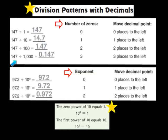In the next problem, we see 147 being divided by 1,000. In the number 1,000, I know that there are three zeros. So what that means is I'm going to move the decimal three places to the left — 1, 2, 3 — and my answer turns out to be 147 thousandths.